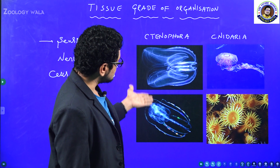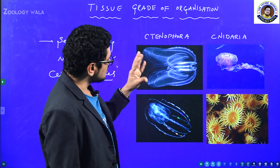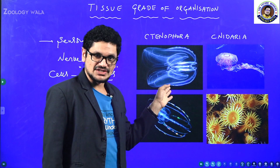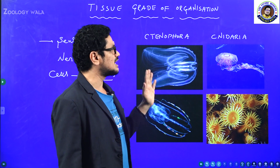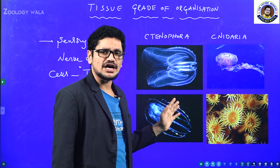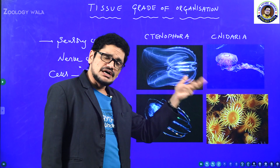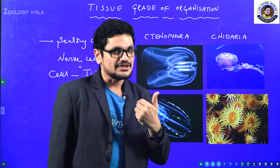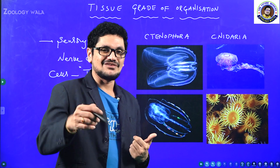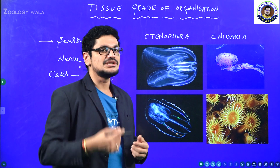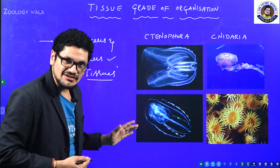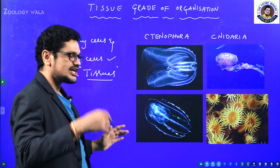Looking at the ctenophores, you can see they are emitting light. Bioluminescence is a well-marked property in ctenophora. Some cnidarians also exhibit bioluminescence, which will be explained in the next sessions. This is the tissue level of organization.